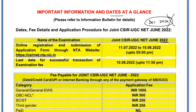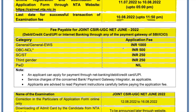The last date for successful transaction of examination fees is 10th of August up till 11:50 PM, so you can fill the form till 10th of August. Regarding fees: General or EWS category candidates pay ₹1000; OBC NCL candidates pay ₹500; SC or ST category candidates pay ₹250; third gender candidates pay ₹250; and PWD candidates do not have to pay any fees.